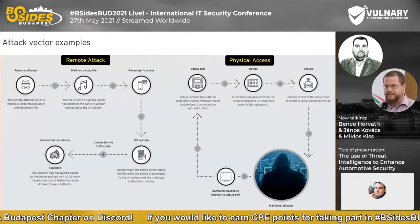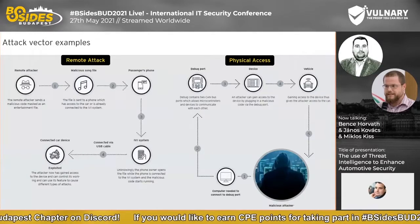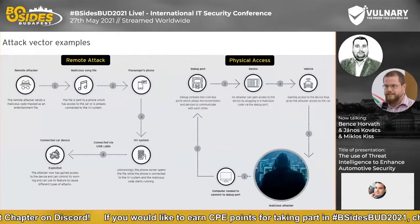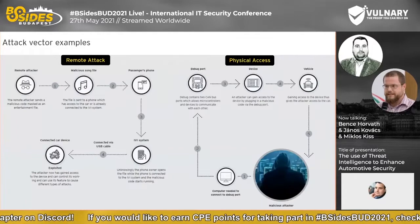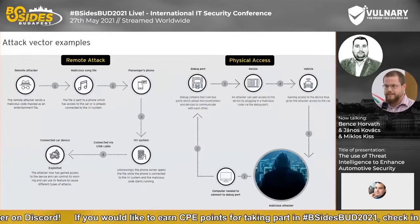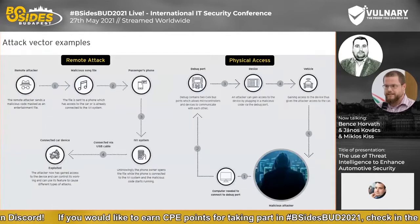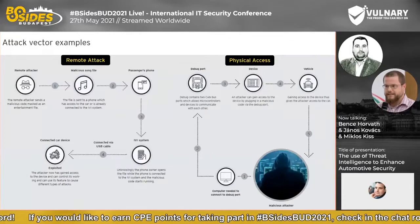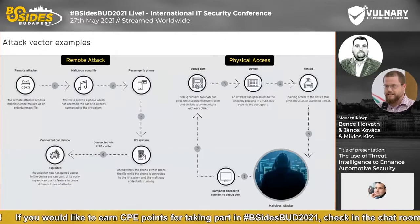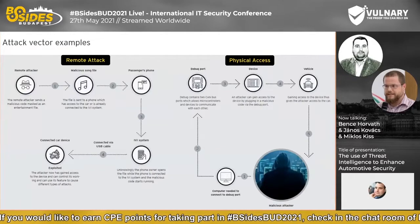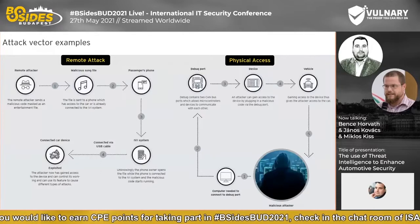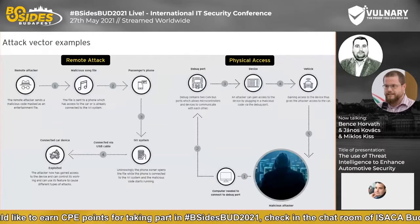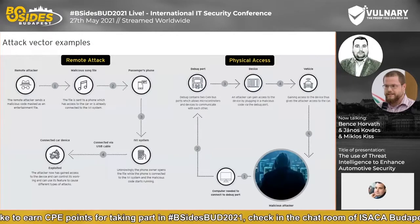A more common attack vector requires physical access to the actual debug port of the car. This physical access can be replicated through a physical device that is then internet-connected. You need physical access to the car's debug port, where you are able to plug in malicious code directly via the debug port and thus take control over the vehicle. This is the main point of the current threat landscape in automotive security, which we'll be referring to throughout our presentation.